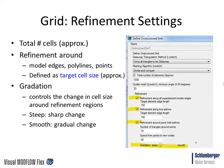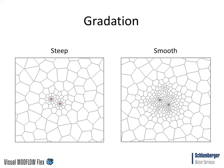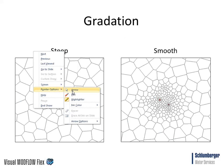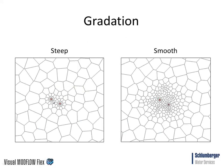The last option is gradation, which controls the change in cell size around the refinement region. A steep change results in a sharp transition from the refinement region to adjacent cells — this is generally not recommended because it can deviate from the CVFD criteria. What's recommended is a gradual change in cell size so the perpendicular bisector condition is met as closely as possible. The smooth option results in a gradual change in cell size — with two points in the middle of the model domain, the steep option shows very small cells jumping to large cells quickly, while smooth shows a gradual transition from refinement region to outer perimeter.